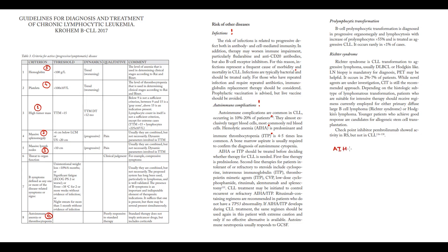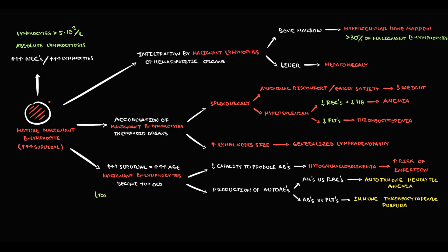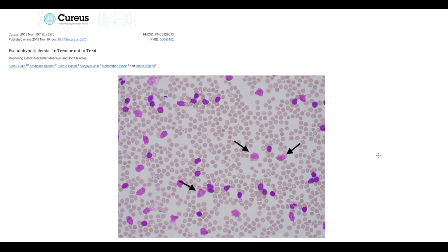To diagnose autoimmune hemolytic anemia, we perform the Coombs test, which will be positive. In blood analysis, hypersplenism or autoimmune complications cause a decrease in red blood cells, hemoglobin, and hematocrit, and platelets decrease — so thrombocytopenia is present. Some lymphocytes can become so old that they won't have the same appearance as other lymphocytes. Such old lymphocytes are called smudge cells or Gumprecht shadows. On the blood smear, we can see smudge cells, and they look quite different from normal lymphocytes.